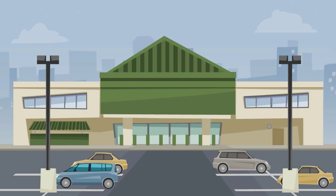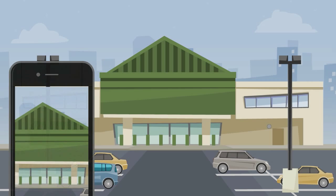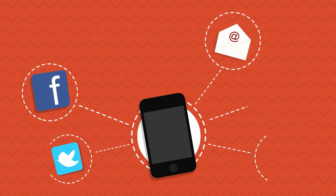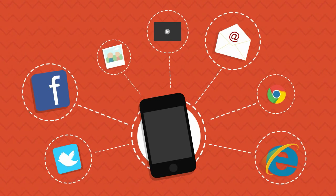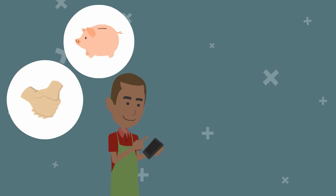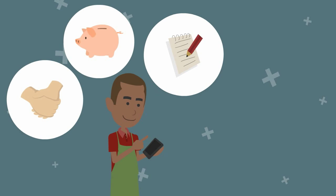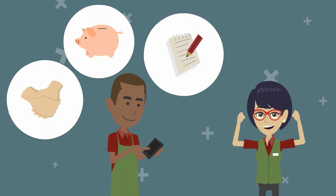Bob wants to host a meet and greet at his store. Using the Member Plus app, he is able to create the event and upload a photo right from his mobile device. The event is promoted on Facebook, Twitter, and his website, all by using the content created in the Member Plus mobile app. He can add hot deals or member-to-member deals to be used on the day of the event, and he can even create a job posting right in the app for that new hire he will need to handle the anticipated growth.